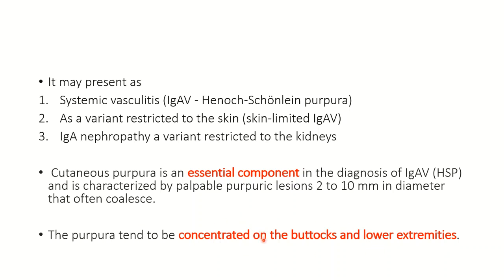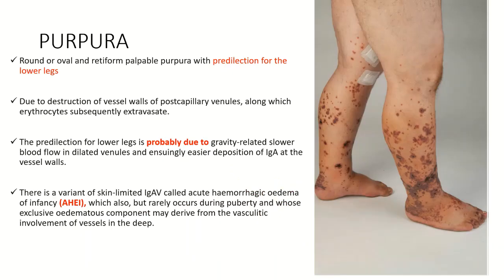The lower extremities are the probable site because gravity-related slower blood flow causes easier deposition of IgA in the vessel wall. There is also a separate variant known as AHEI — acute hemorrhagic edema of infancy — wherein skin-limited IgA vasculitis has an associated edema component. This is actually an acute condition and rarely occurs during puberty due to its exclusive edema component.